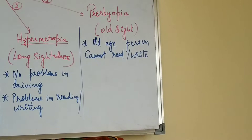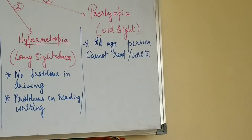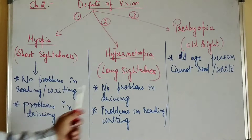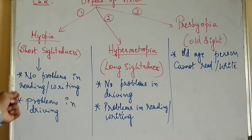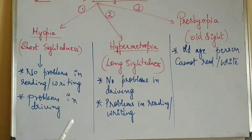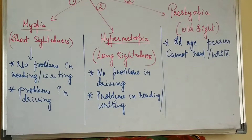Old age persons cannot read and write clearly. For all three defects, there is always a correction available using proper lenses. These defects — especially myopia and hypermetropia — are due to the eye lens or a defect in the eye. In the next videos, we shall study myopia and hypermetropia in detail: how they are caused and what the correction is, using ray diagrams.